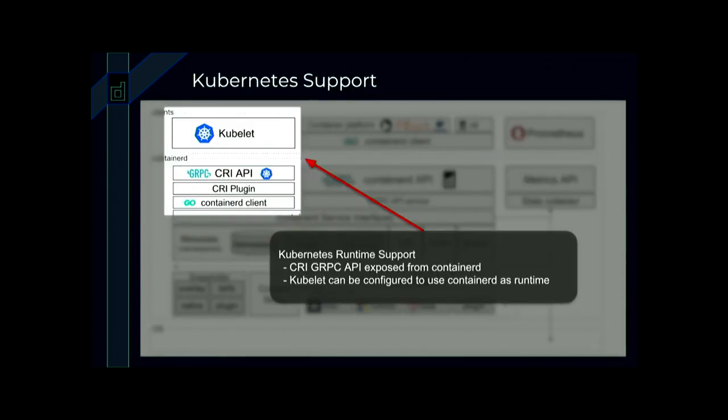The CRI plugin is how Kubernetes support is provided through Containerd. The plugin uses the same Go client — it's written in Go and becomes a client of Containerd to handle CRI API calls, using the same listener Unix socket. Kubelet talks to the CRI, says create me a sandbox or create me a container, and the CRI plugin uses the Containerd Go API to do that work.